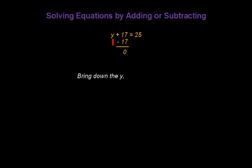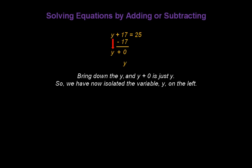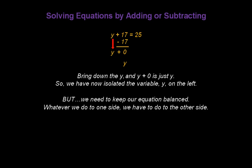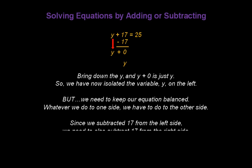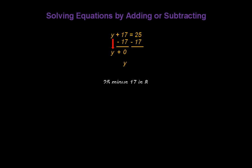Subtracting 17 from a positive 17 effectively cancels the 17, because 17 minus 17 gives us 0. Let's bring down the y from above, and we have y plus 0 on the left — and y plus 0 is just y. So we've now isolated the variable y all by itself on the left. We need to keep our equation balanced, so whatever we do to one side, we have to do to the other side. Since we subtracted 17 from the left side, we also subtract 17 from the right side. 25 minus 17 is 8, so y equals 8.